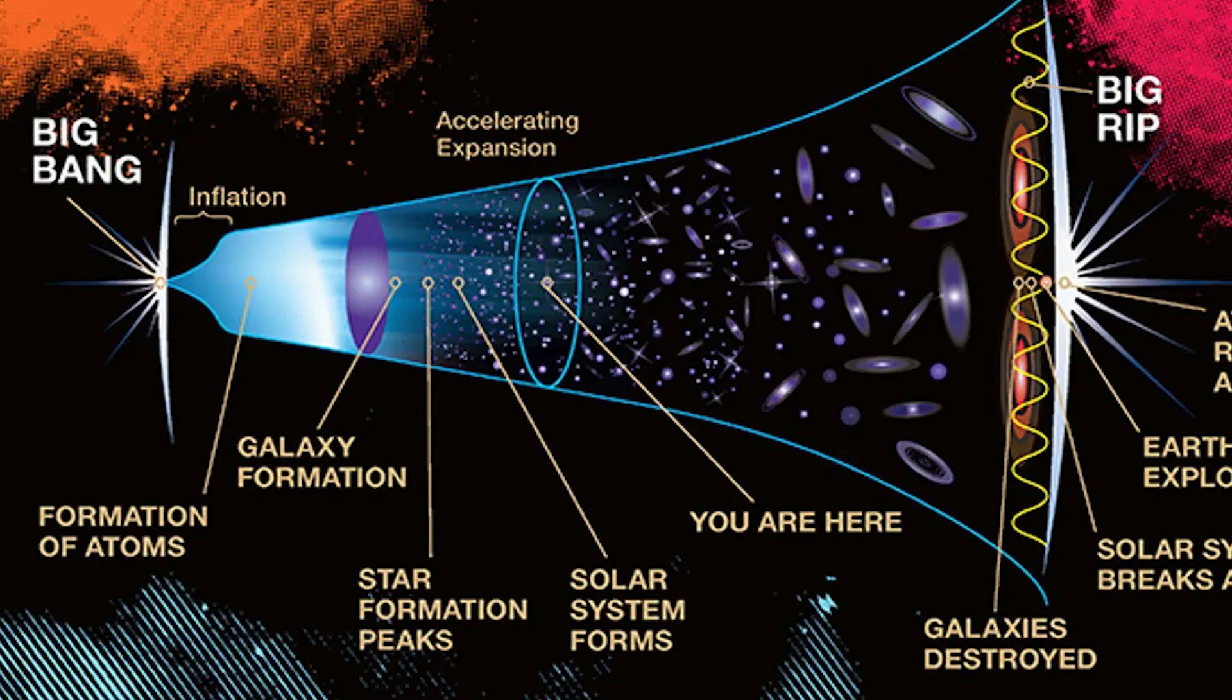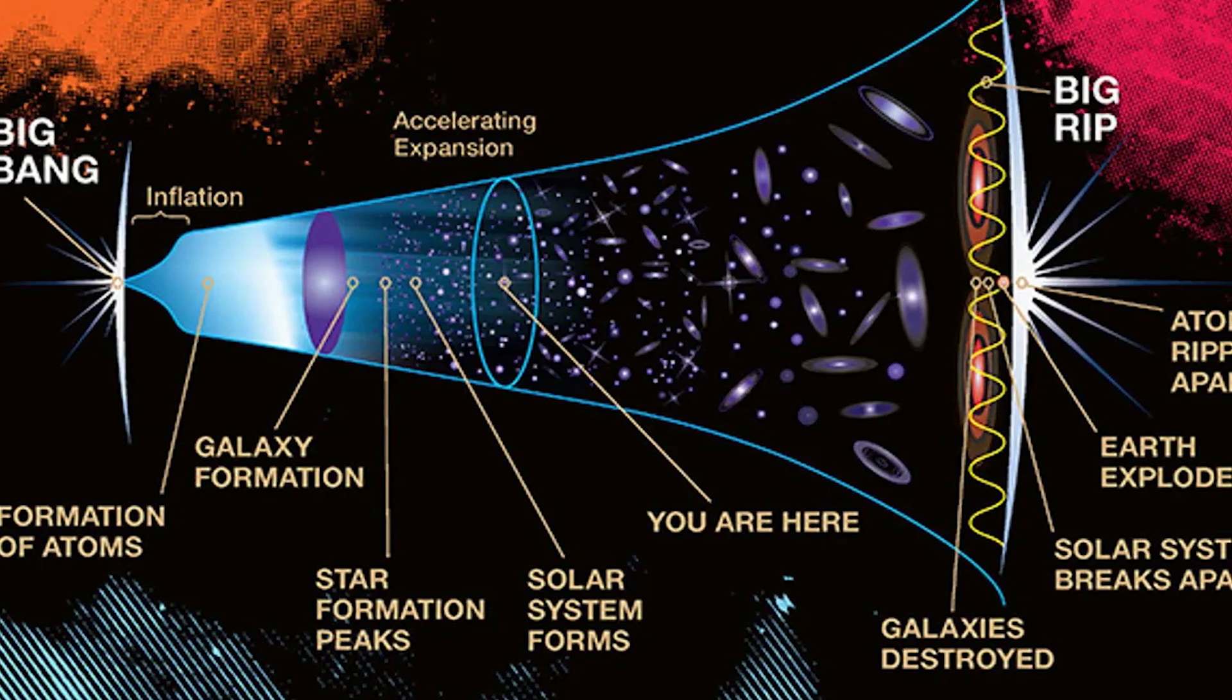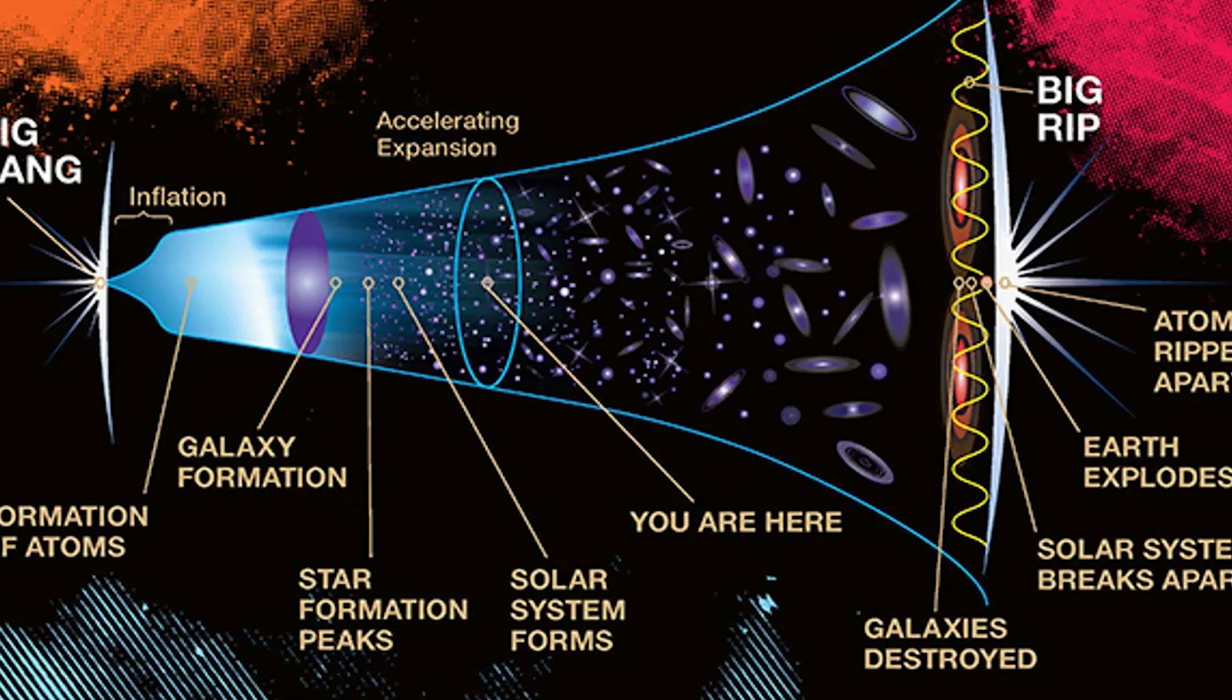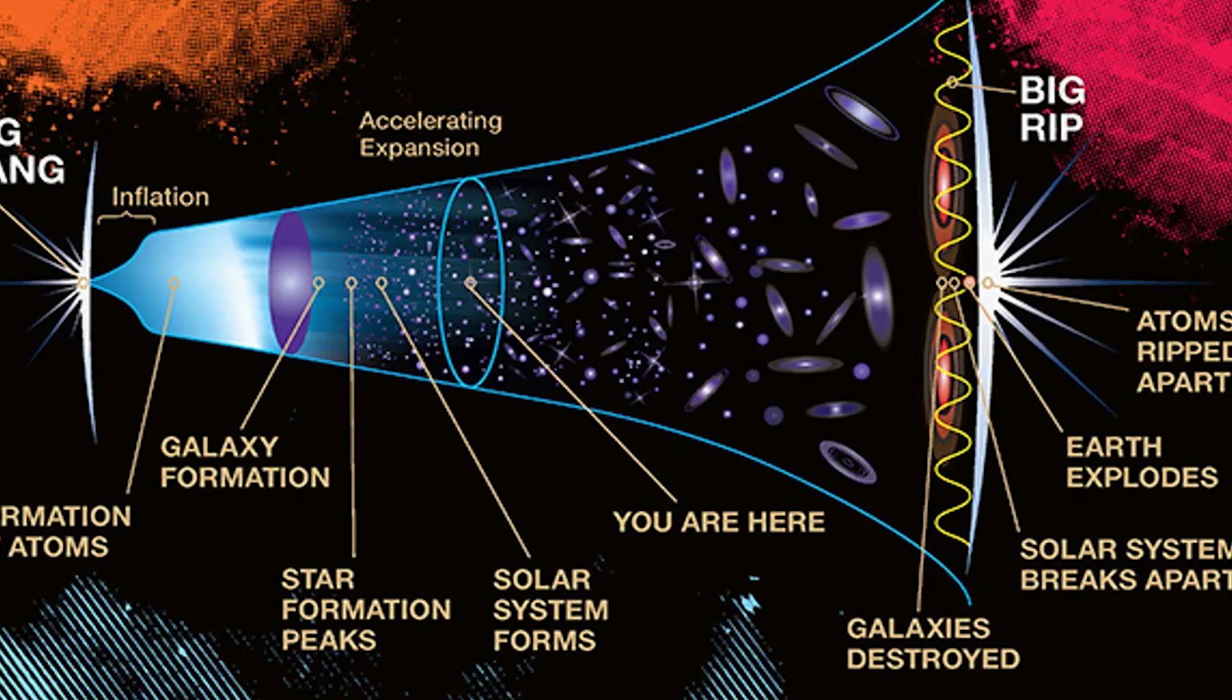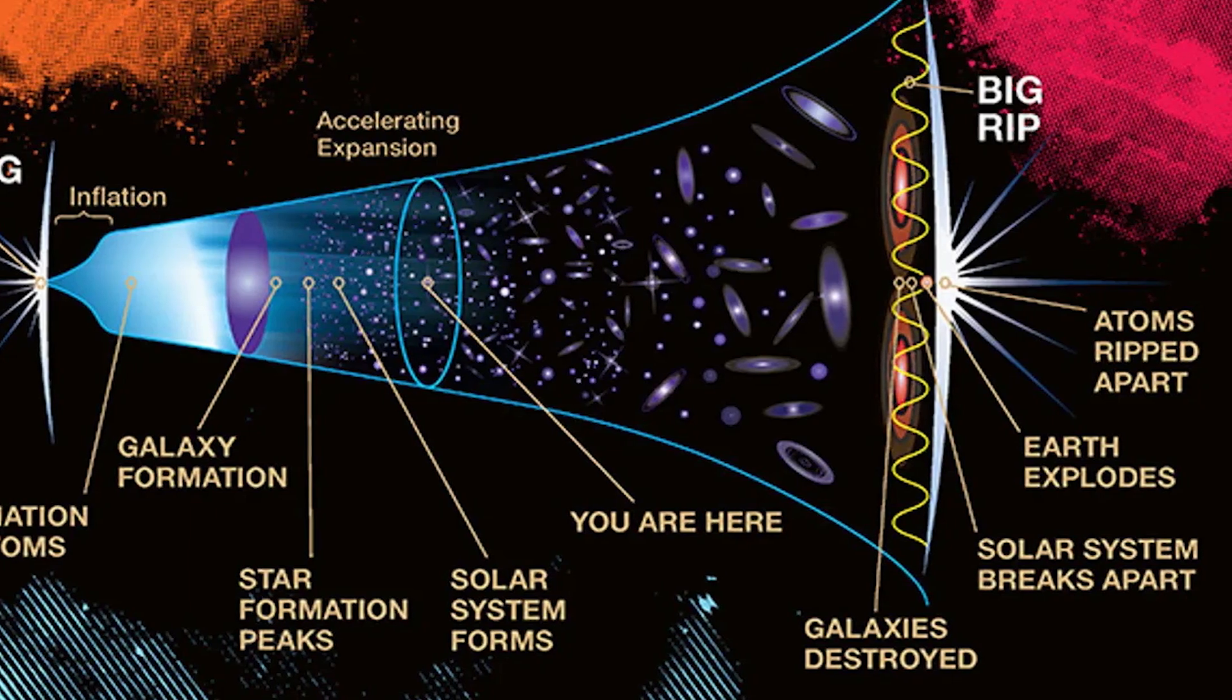An easy analogy to best describe the event is to liken it to the rubber band. When stretched too far and beyond its resistive limit, the rubber band snaps and causes it to fire in random directions. In this case, the universe is the rubber band.